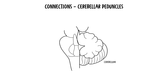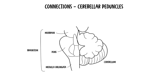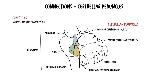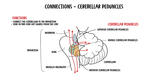The cerebellum connects to the brainstem — the pons, midbrain and medulla — through the cerebellar peduncles. There are three cerebellar peduncles: the superior peduncle, the middle peduncle and the inferior peduncle. The peduncles are very important as they connect the cerebellum to the brainstem and act to send in and send out signals from the cerebellum.